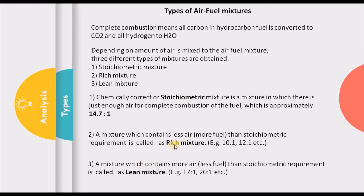A lean mixture contains more air or in other words less fuel. When the mixture is lean, we are supplying lean in terms of fuel — a lean mixture contains lesser fuel than stoichiometric, meaning more air. For example, 17:1 or 20:1, meaning 17 or 20 units of air for one unit of fuel. So 17:1 or 20:1 or 22:1 are all lean mixtures. Any value bigger than 14.7 means more air than stoichiometric, making it lean. Any value lesser than 14.7, such as 12, 10, or 9, makes it rich. If you supply more than 14.7 air it is lean; if less, it is rich.